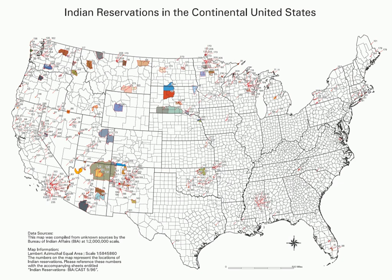Because tribes possess the concept of tribal sovereignty, even though it is limited, laws on tribal lands vary from those of the surrounding area. These laws can permit legal casinos on reservations, for example, which attract tourists. The tribal council, not the local government or the United States federal government, often has jurisdiction over reservations. Different reservations have different systems of government, which may or may not replicate the forms of government found outside the reservation. Most Native American reservations were established by the federal government; a limited number, mainly in the East, owe their origin to state recognition.